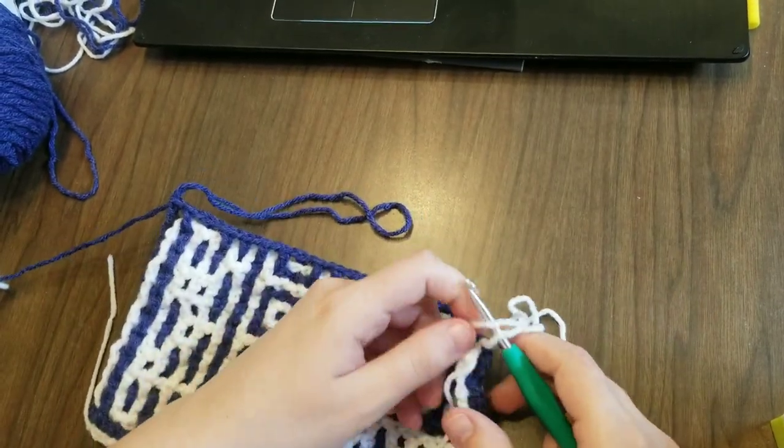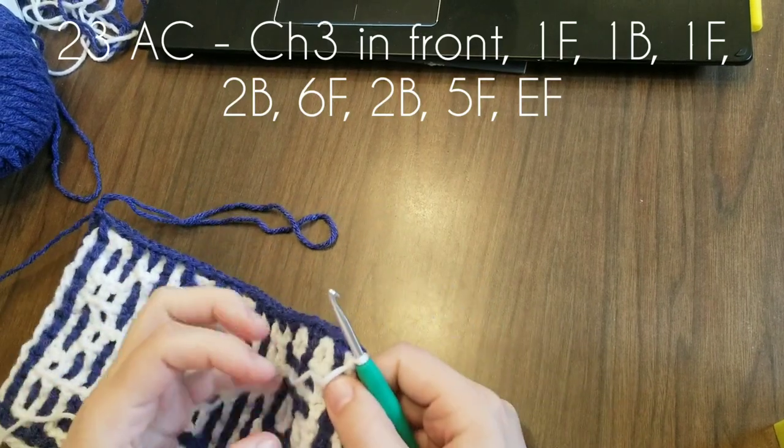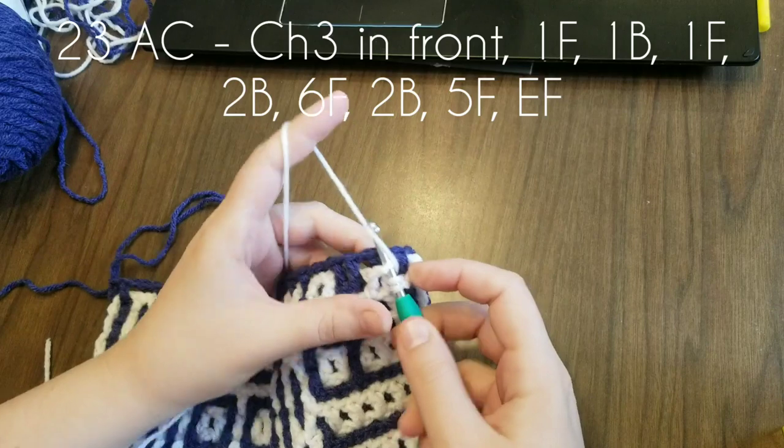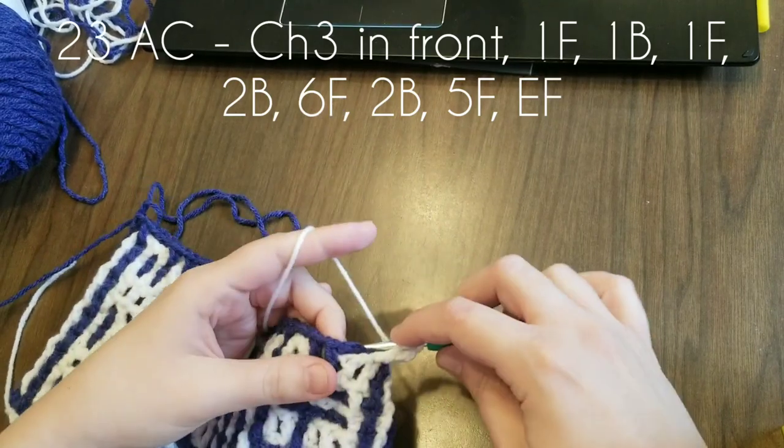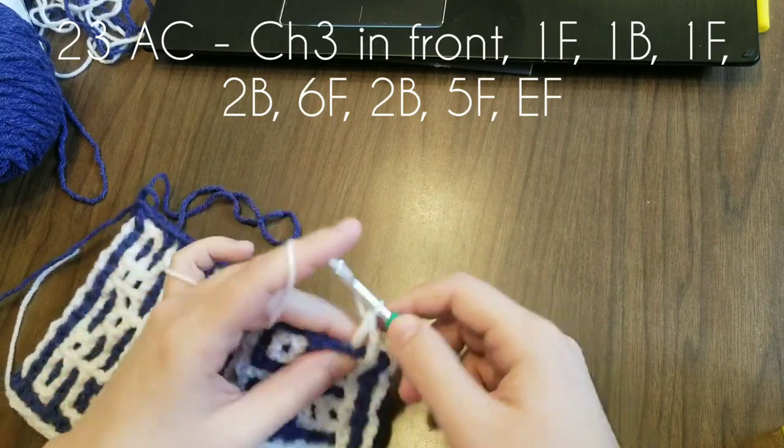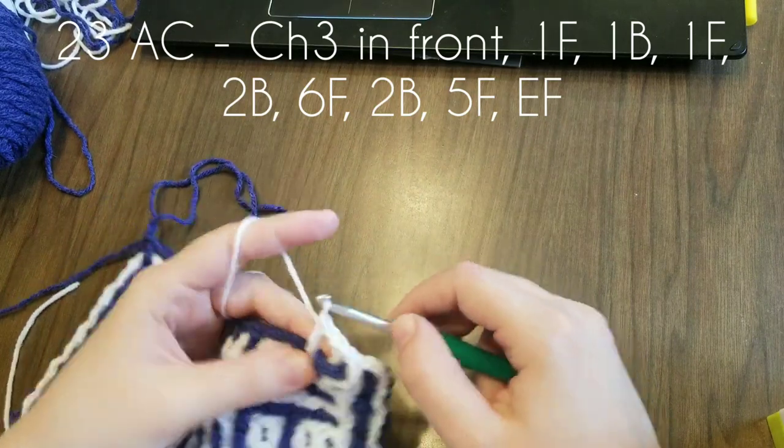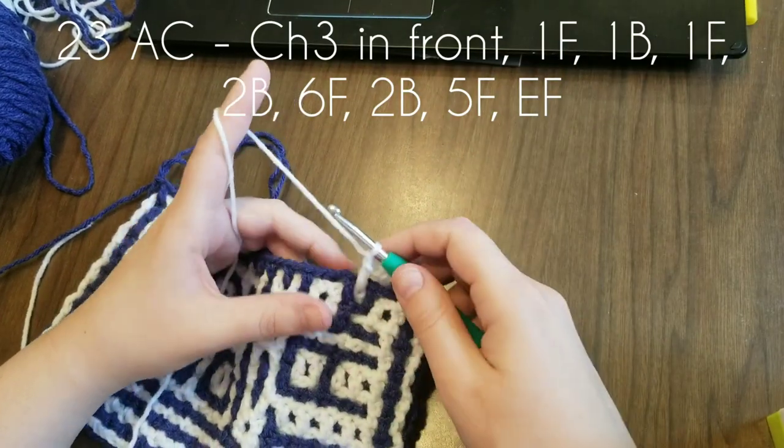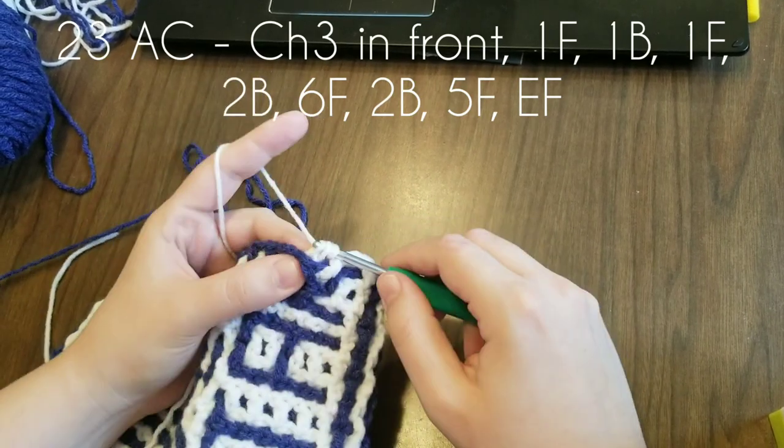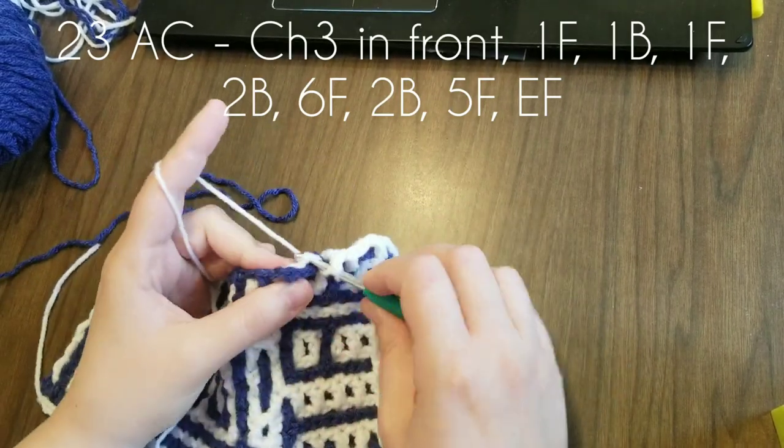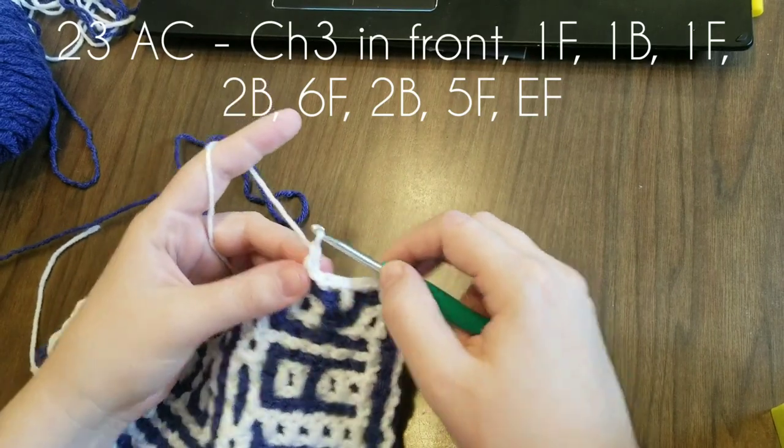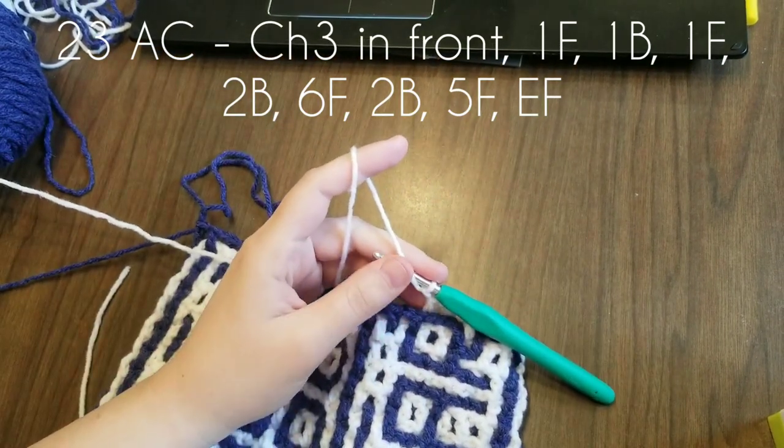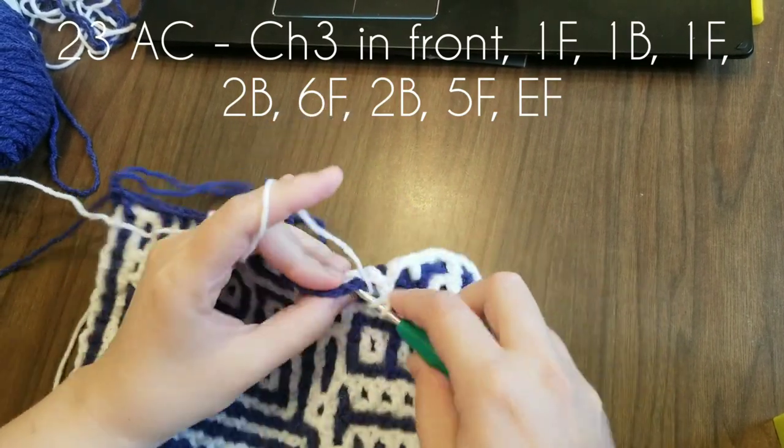Now row 23. Make sure you get it on the hook before you pull. Chain three in the front. One front, back, front. Sometimes I can hold three instructions in my head at once. So far I did not move my mouse. I don't know which row I am. There we go, two in the back. Actually, if I believe, I think it's three to four pieces of information is how much the average grown-up can hold in their head.